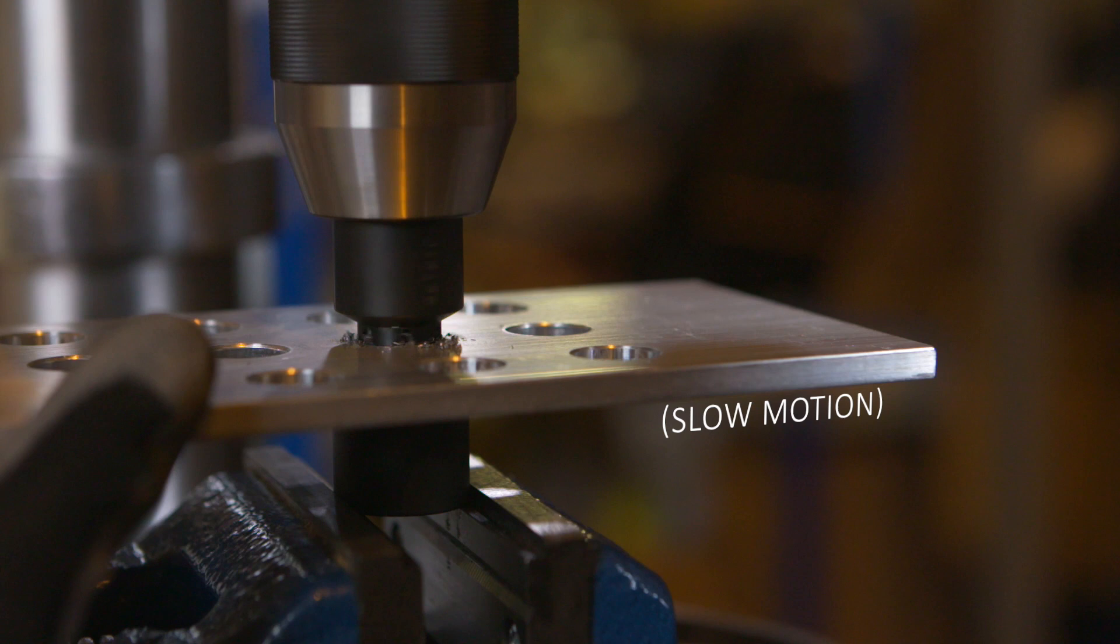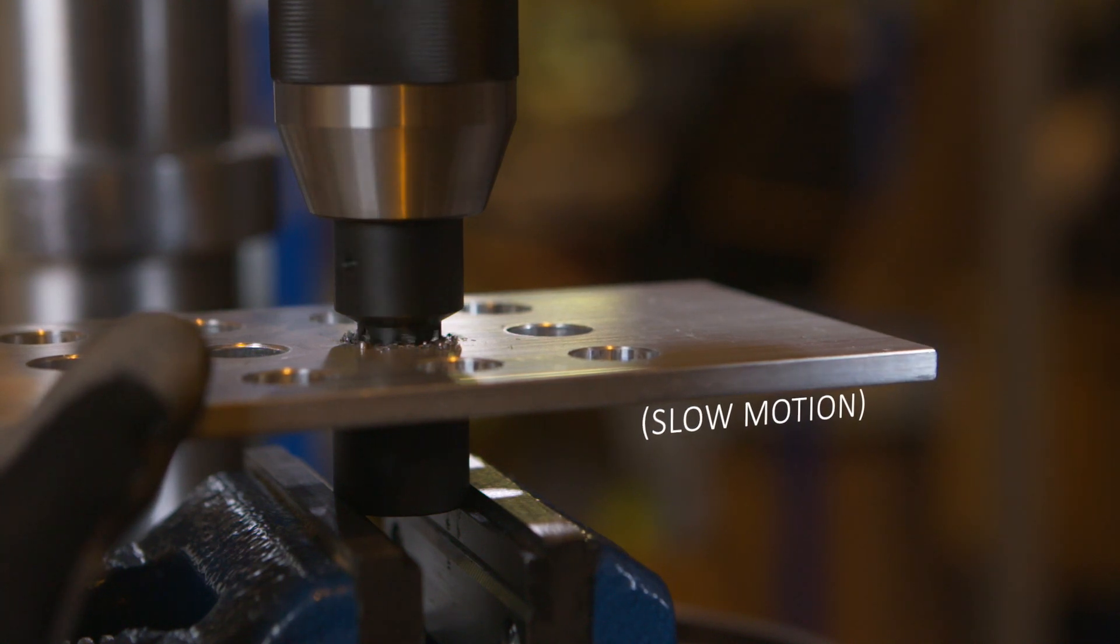Once the contact stop point has been reached, the bearing is ready for removal using a Unisys portable install and remove tool.